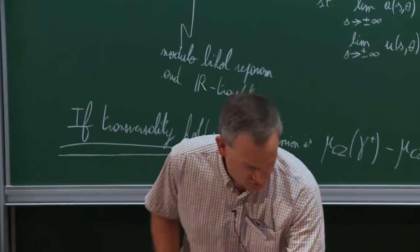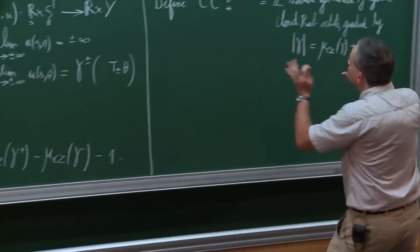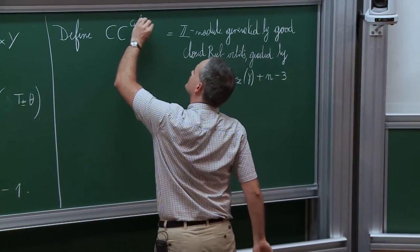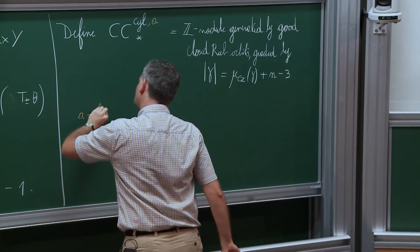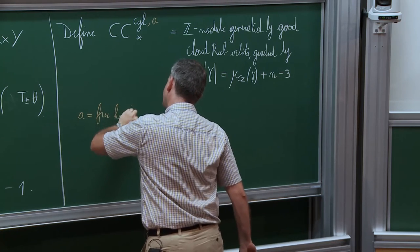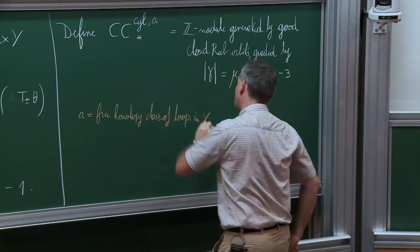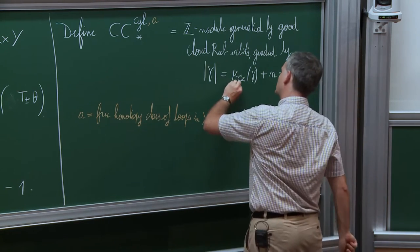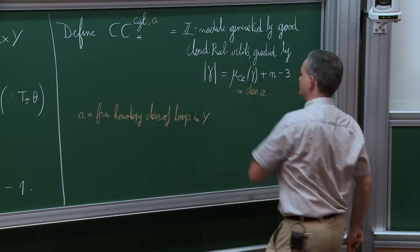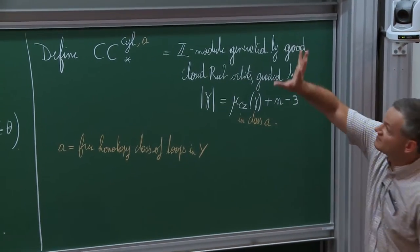This complex is graded not exactly by the Conley-Zehnder index, but shifted by a constant n−3, where n appears in the dimension of the contact manifold. The reason for this shift will become apparent in a moment. This is still potentially very large, so it's sometimes good to restrict to a smaller object. I pick a free homotopy class of loops A in Y, and restrict myself to those Reeb orbits that are in class A.